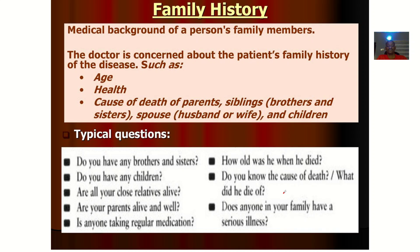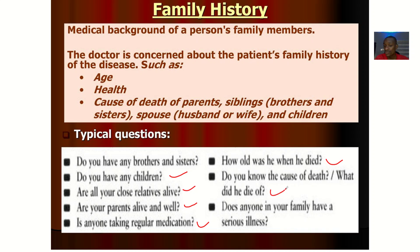Typical questions you might actually need to ask include: Do you have any brothers or sisters? Do you have any children? Are your close relatives alive? Are your parents alive and well? Is anyone taking any regular medications? If anybody is dead in your family, how old were they before they died? Do you know the cause of what killed them? Does anyone in your family have any serious or chronic illness?